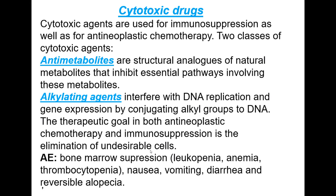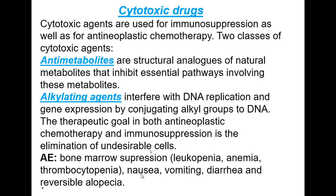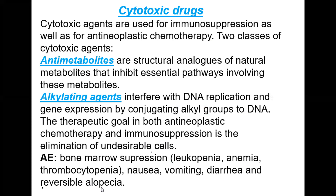The therapeutic goal in both anti-neoplastic chemotherapy and immunosuppression is elimination of undesirable cells. These drugs are non-selective against cellular and humoral immunity. Their target is rapidly dividing cells, such as blood cells, causing bone marrow suppression, leukopenia, anemia, and thrombocytopenia. Epithelial cells of the gastrointestinal tract are also rapidly dividing, causing nausea, vomiting, and diarrhea. Hair follicles also divide rapidly, leading to alopecia.